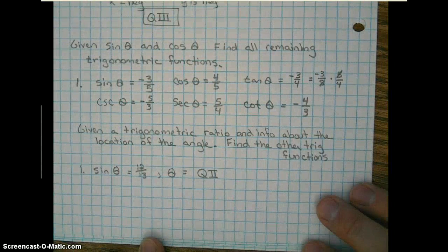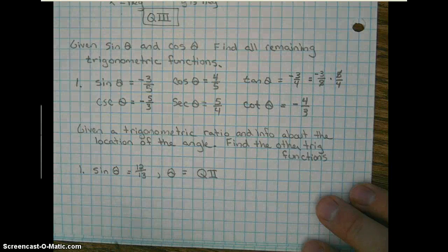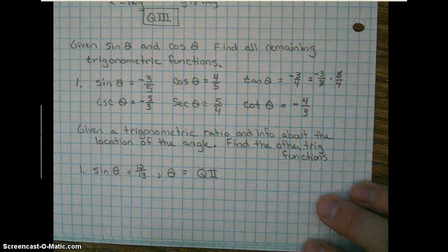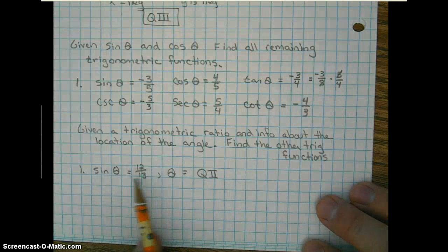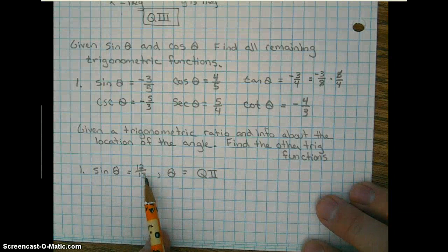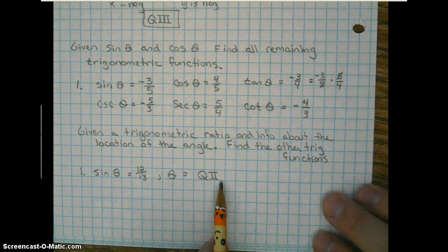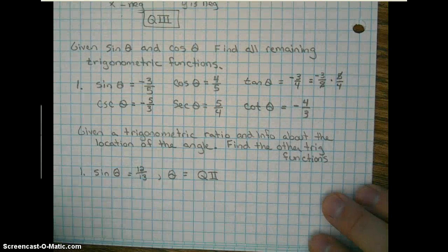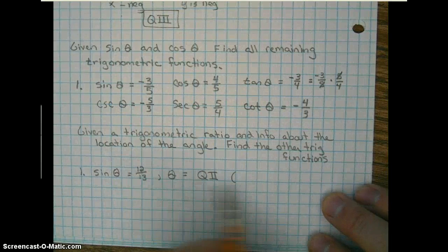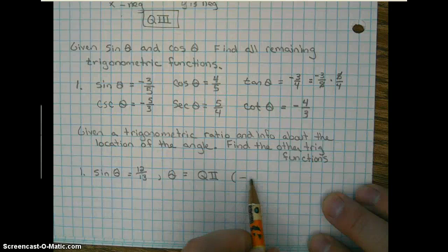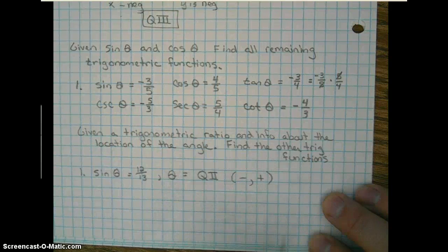Given a trigonometric ratio and information about the location of the angle, find the other trig functions. So here we're given the sine of theta is equal to 12 over 13, and we know that the angle is in quadrant 2. So the first thing you have to consider is, in quadrant 2, x is negative, y is positive. That's important.